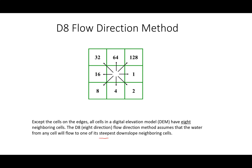Let's try to see what this steepest downslope means, how to calculate that, and how that is used in calculating the D8 flow direction. The idea is: if the target cell is this one, the water from this cell will only flow to one of these eight neighboring cells — that's the D8 flow direction method.